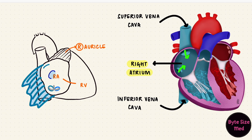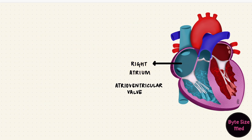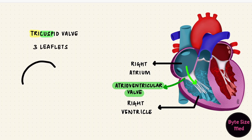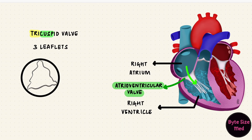The right atrium leads into the right ventricle through the atrioventricular valve. Blood from the right atrium flows into the right ventricle through an atrioventricular opening guarded by a valve called the tricuspid valve. The tricuspid valve has three cusps, or leaflets, hence the name. If we look at the valve from above, we can see the three leaflets: the anterior, posterior, and septal leaflets.